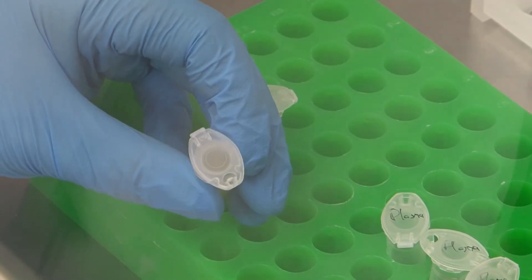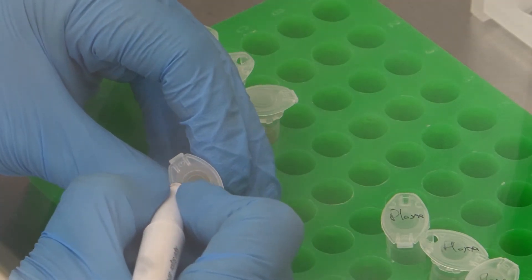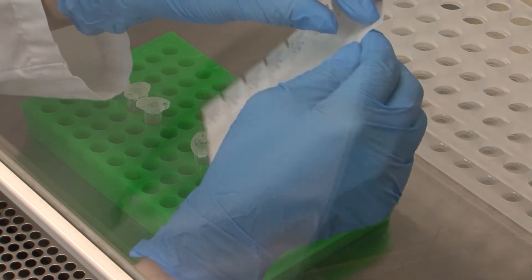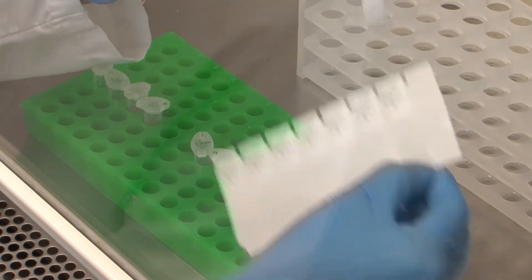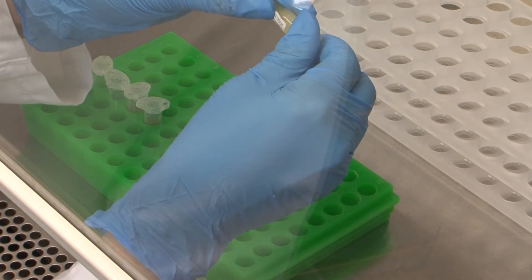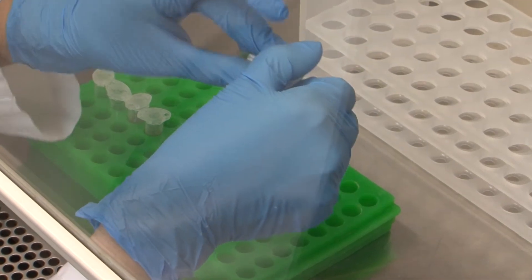Tubes containing plasma or serum should be labeled with the patient ID number, the date and time at which the sample was obtained, and the sample type. This information can either be written on the tubes with a permanent marker or provided on a label.